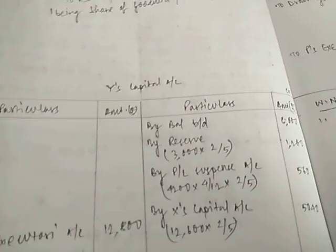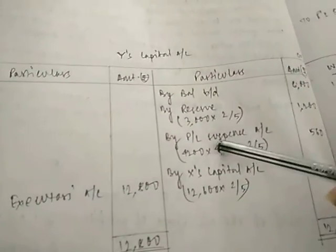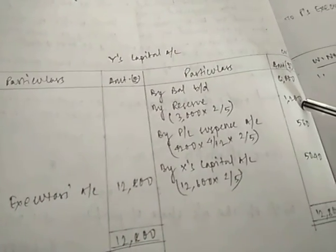By balance biddy 6,000 is the capital of Y given in the question here. Next is reserve. Reserve was 3,000 and the share of Y is 2 by 5. So 3,000 into 2 by 5, that is 1,200 is given to Y.